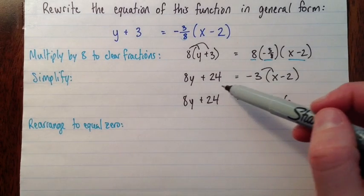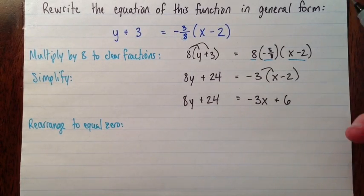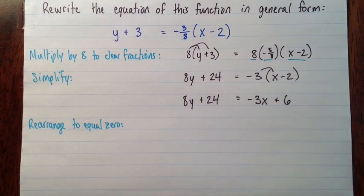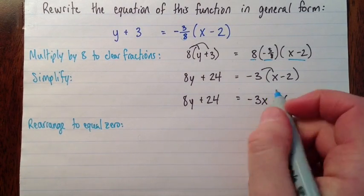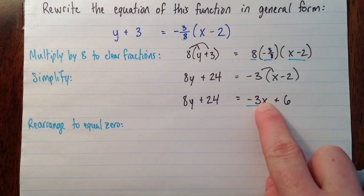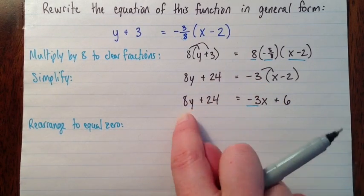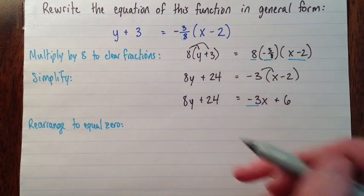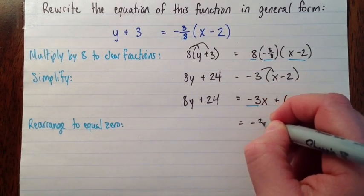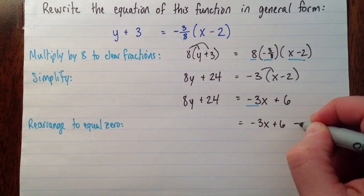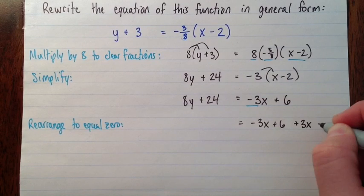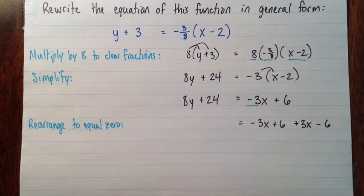And again, the way I decide which side to put it on, it saves me steps if I sort of look ahead and think which side will make my a term, which is the coefficient on x, which side will make that positive. So right now it's negative. So if I add 3x to both sides, it'll be like it moved over here and became positive. So I'm going to put everything on the left. So the way I do that is I'll have to subtract... Oh, sorry. I'll add 3x and I'll subtract 6 from both sides.